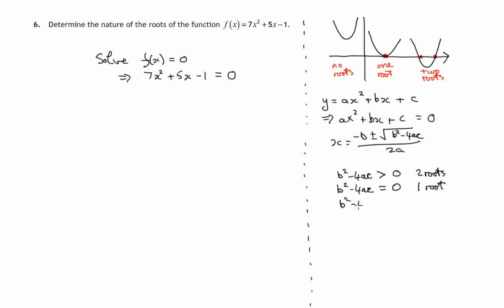And of course if b squared minus 4ac is less than zero you're in a bit of a problem because the square root of a negative number is certainly not a real number. So plus or minus there is no real number that we're adding or subtracting. The whole thing breaks down and would say there's no real roots.